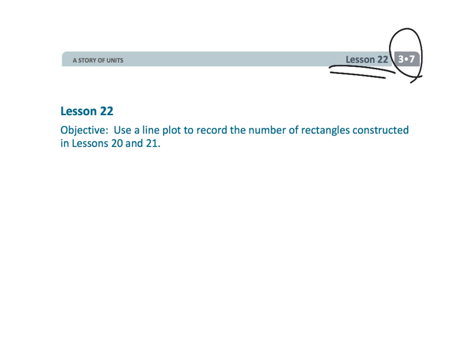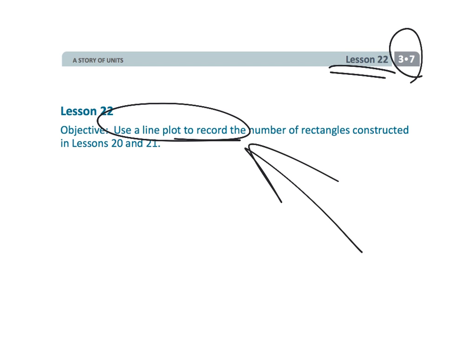And that wraps up 3rd grade, Module 7, Lesson 22. We're kind of piecing areas and perimeters together and organizing our thinking on line plots.